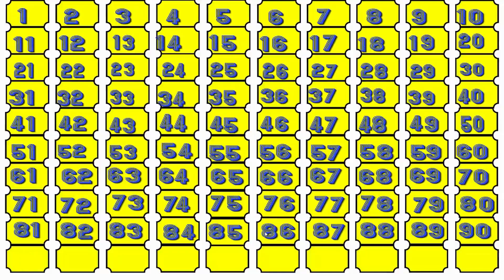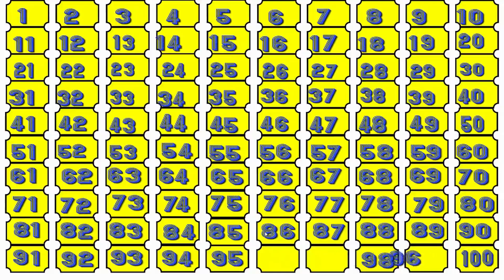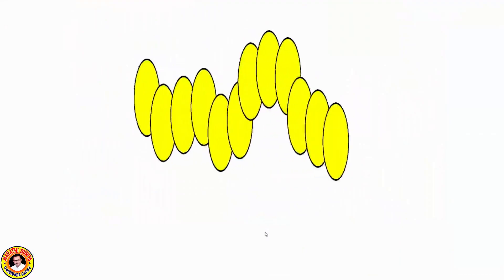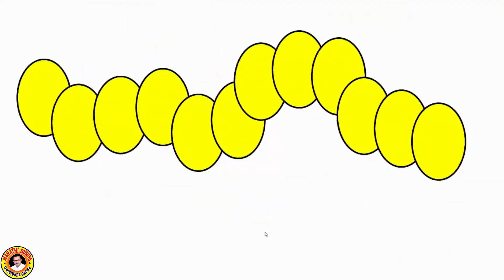The next and last line: the given numbers are 92, 95, 98, and 100, and the remaining numbers are 91, 93, 94, 96, 97, and 99. We complete 91 to 100. This way we complete 1 to 100 and we read it loudly.